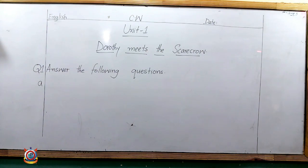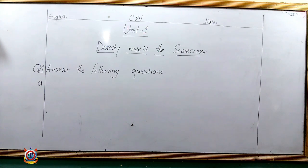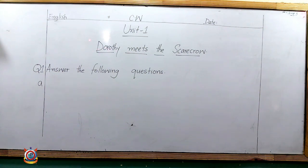I am not writing the date because I don't know at which date you will get the video, so you have to write the date of the day when you get the video on YouTube. After that, you have to write the unit number, which is Unit Number One, then you will write the name of the unit: Dorothy Meets the Scarecrow. Be careful about the capitalization — Dorothy with capital D and Scarecrow with capital S.